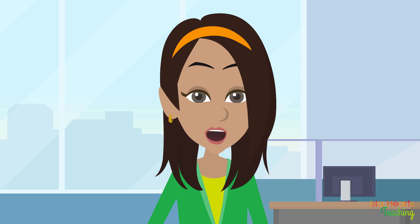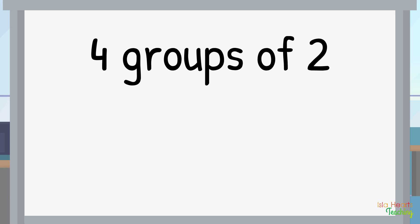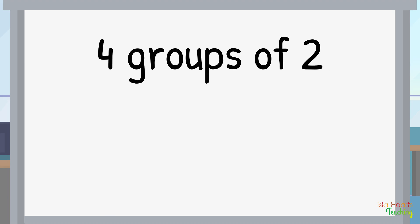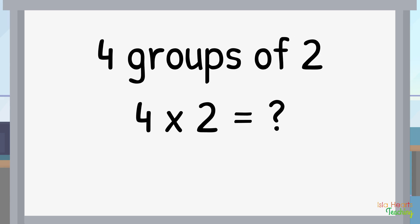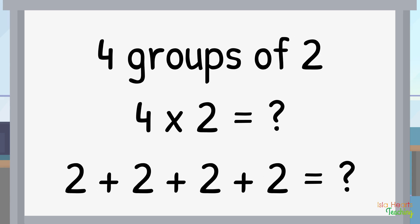But let's step back for a moment and look at an example. Let's say we want to find out how many are in 4 groups of 2. If we were to write this as a multiplication equation, it would look like this: 4 groups of 2 equals. And since we know that multiplication is repeated addition, we know that it could also be written as 2 plus 2 plus 2 plus 2 equals.